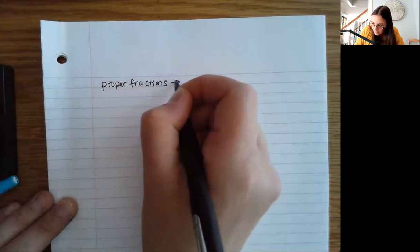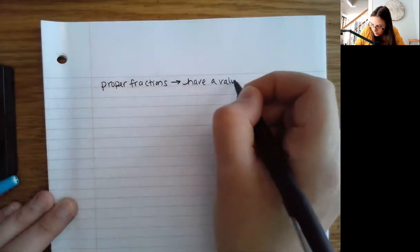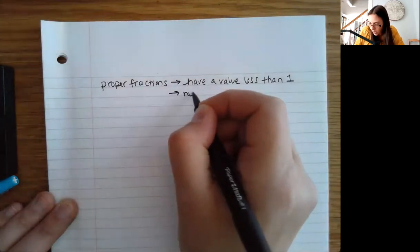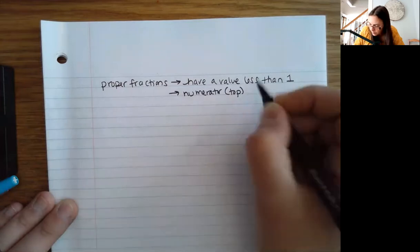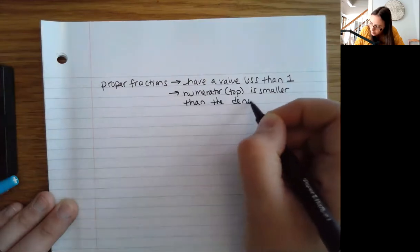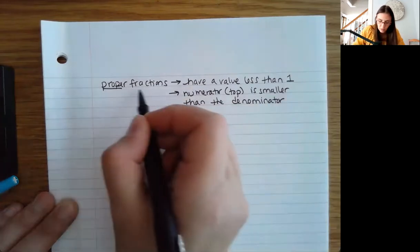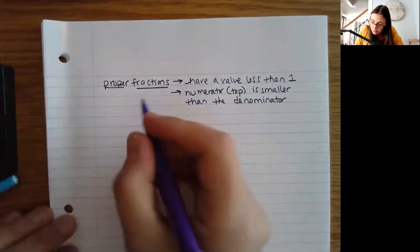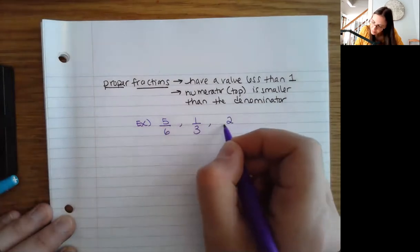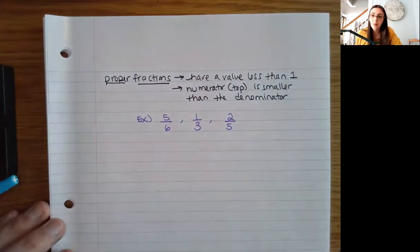So we have proper fractions. These have a value less than one. What you'll notice is that the numerator — the top — is smaller than the denominator. Some examples: all the ones we've just seen — five sixths, one third, two fifths, et cetera. Each of these has a numerator that's smaller than the denominator, and because of that they have a value smaller than one, or less than one whole.